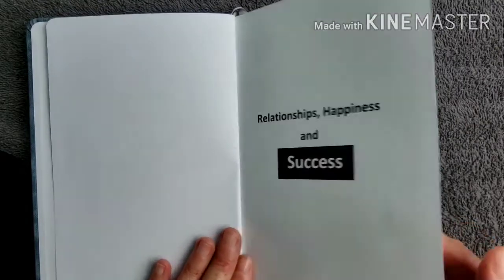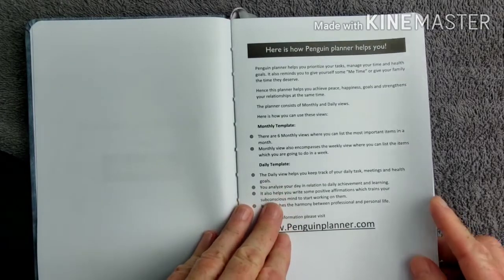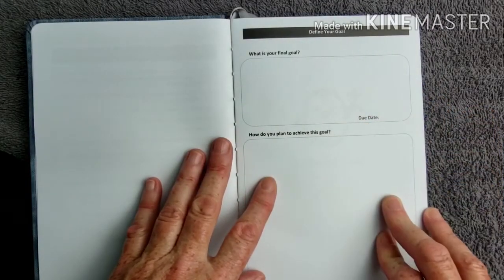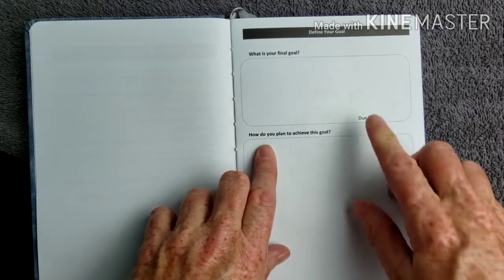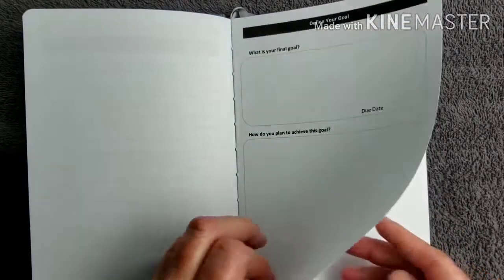Relationships, happiness, and success. So here's a page that shows you how to use the penguin planner. And right away it wants you to write down a goal. What is your final goal and the due date? How do you plan to achieve this goal? So just list the steps you want to take to get to that goal.